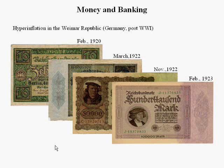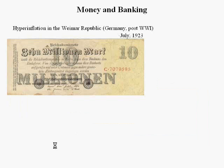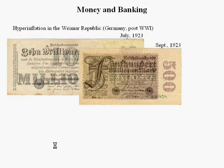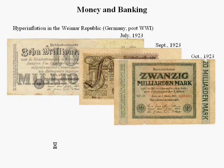By 1923, a few months later, they were producing 100,000-mark notes. A few months later, it was up to 10 million mark notes, then 500 million mark notes. One note says something like '20-something marks,' but what happened is they had so many zeros on the currency that they had to erase some zeros.